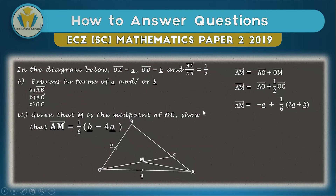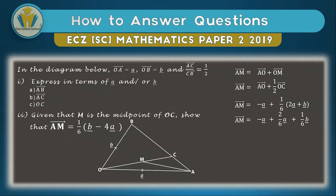Vector OC equals one-third times (2a + b). We take half of OC for vector OM. Expanding the half multiplied by one-third (2a + b): multiplying the fractions one-half and one-third gives one-sixth, so OM equals one-sixth (2a + b). Combined with the negative a from AO, we arrange positive terms first and then simplify.